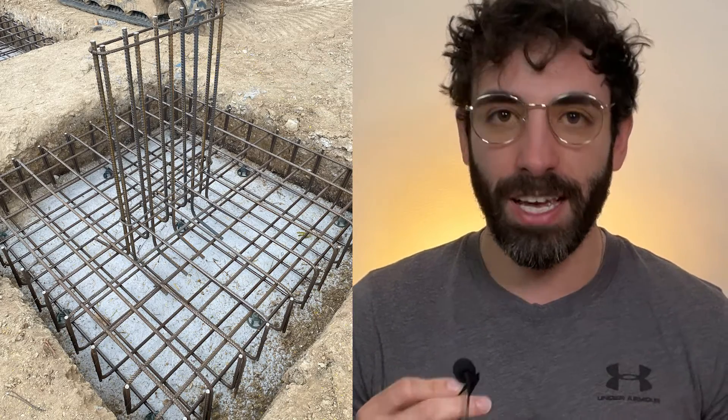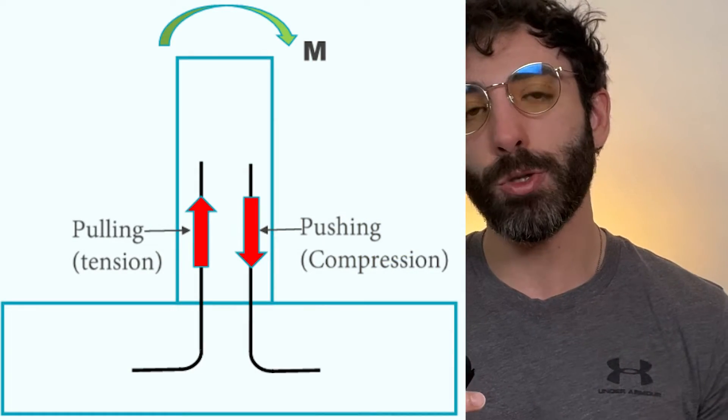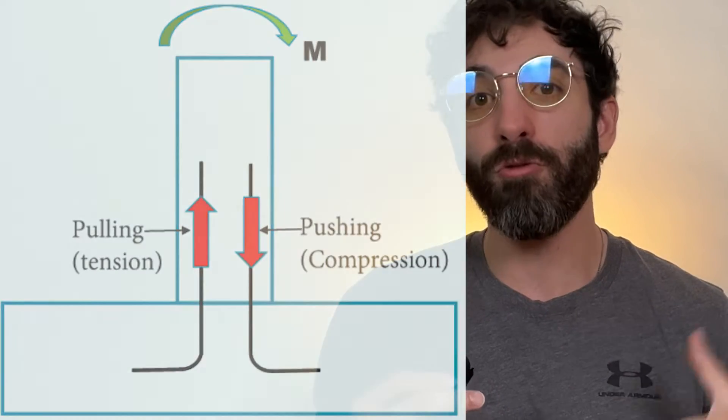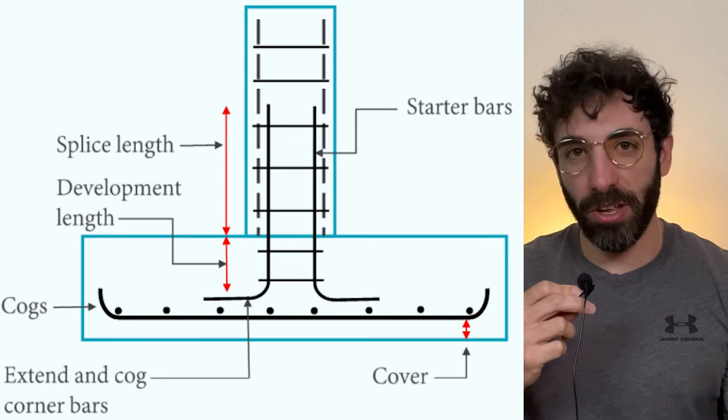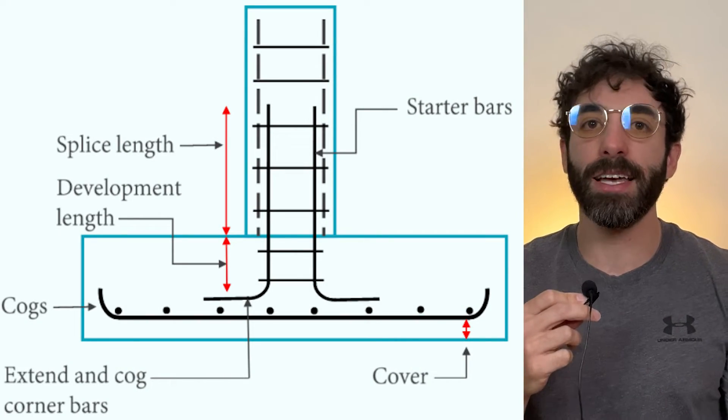Now that we understand the concept of embedment length, let's look at real-life situations where we must take that into account. The first most obvious scenario is starter bars coming out of footings. If the footings are subjected to uplift or bending moment, typically the full tensile development length must be achieved for the starter bars. We usually cog the reinforcement to achieve 0.5 times the development length. There's also a compressive development length — if you want to know more, check out the pad footing video.